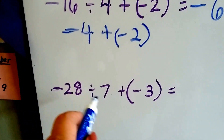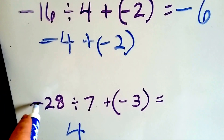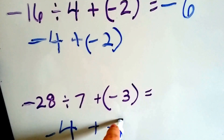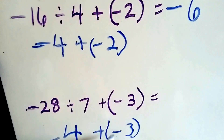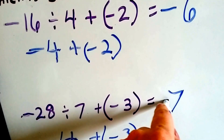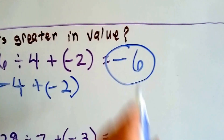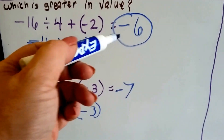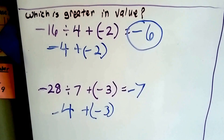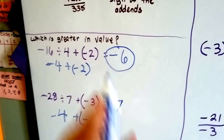Now let's see what this one is: negative 28 divided by 7. 28 divided by 7 is 4. Because this is a negative and that's a positive, it's going to be negative 4 because they're unlike. Now we add negative 3. They both have a negative sign, so we just add them: 4 plus 3 is 7. We take the sign — both negative — so it's negative 7. Which one's bigger, negative 6 or negative 7? Negative 6 is bigger — it's closer to 0. Would you rather owe somebody $6 or $7? So the negative 6 is a larger value because it's not so far down on the number line. Smaller negative numbers are actually bigger.